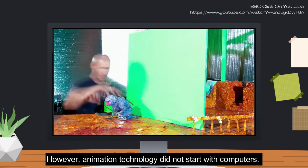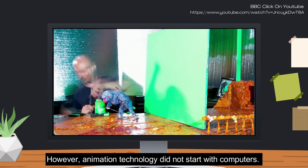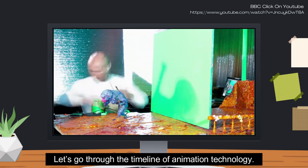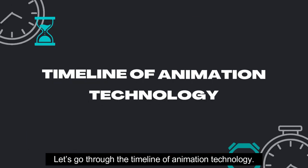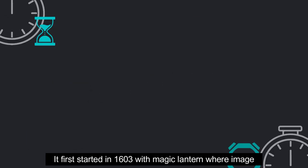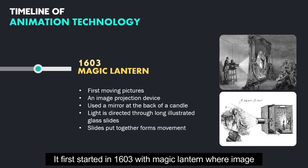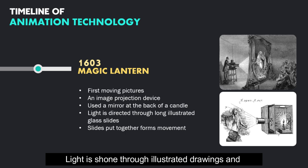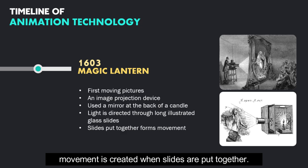However, animation technology did not start with computers. Let's go through the timeline of animation technology. It first started in 1603 with magic lantern, where an image is projected by using a mirror behind a candle. Light is shown through illustrated drawings and movement is created when slides are put together.